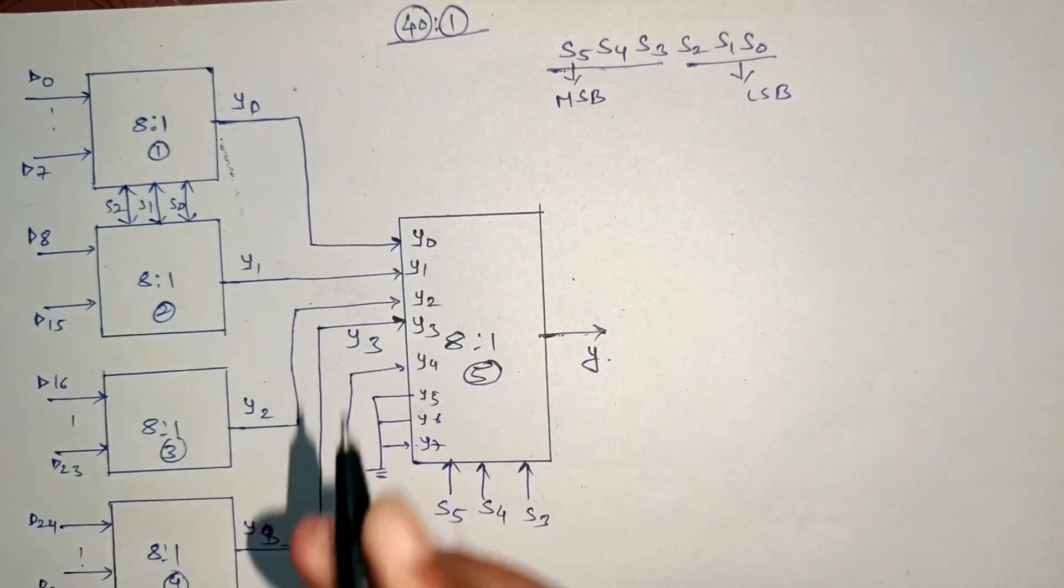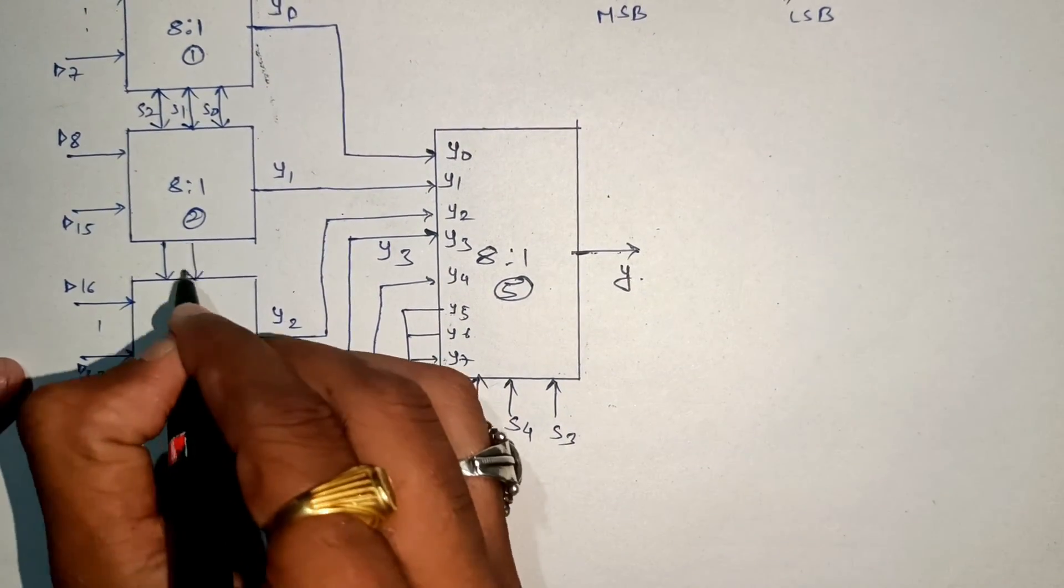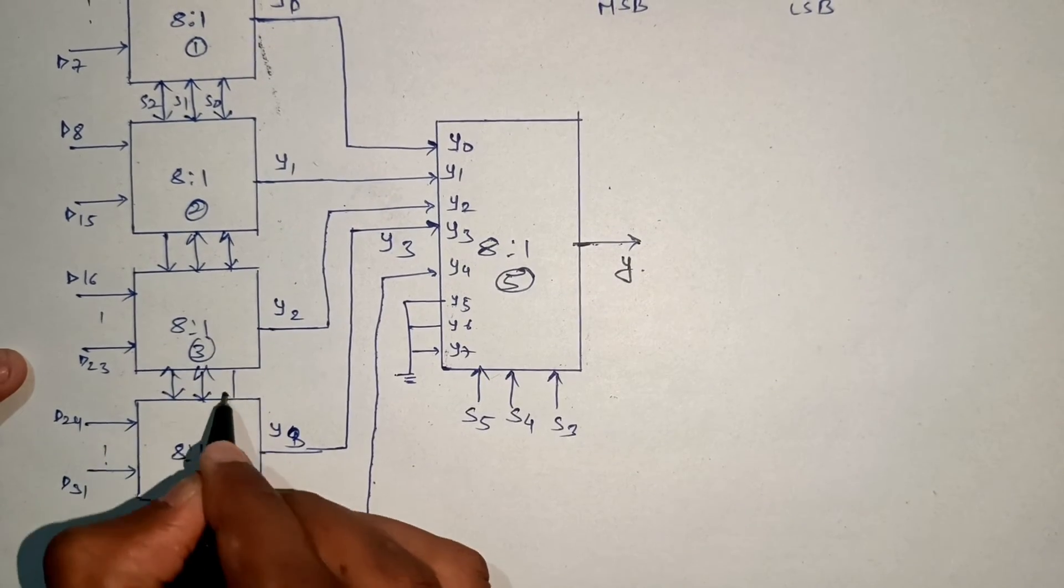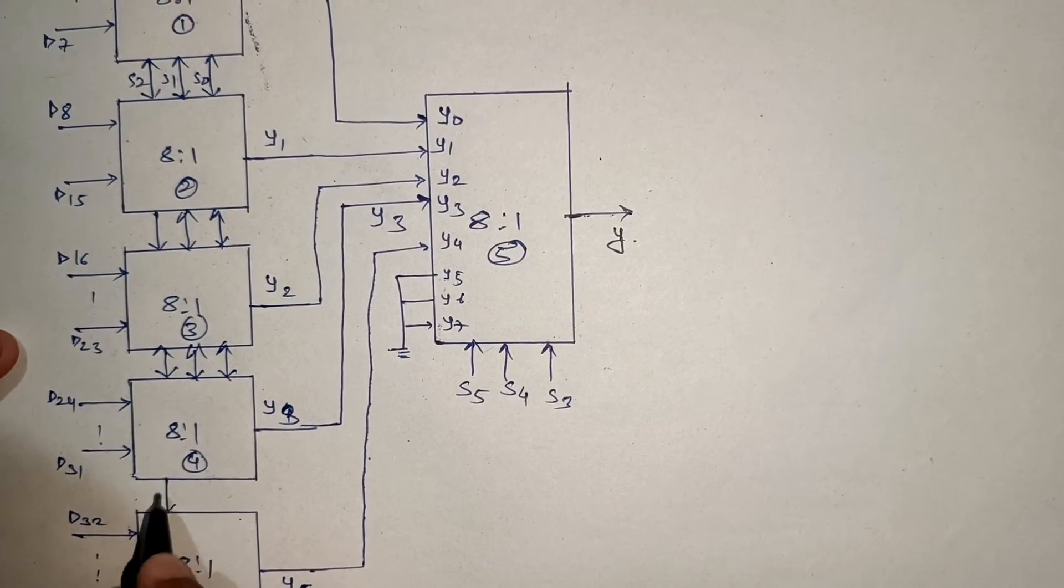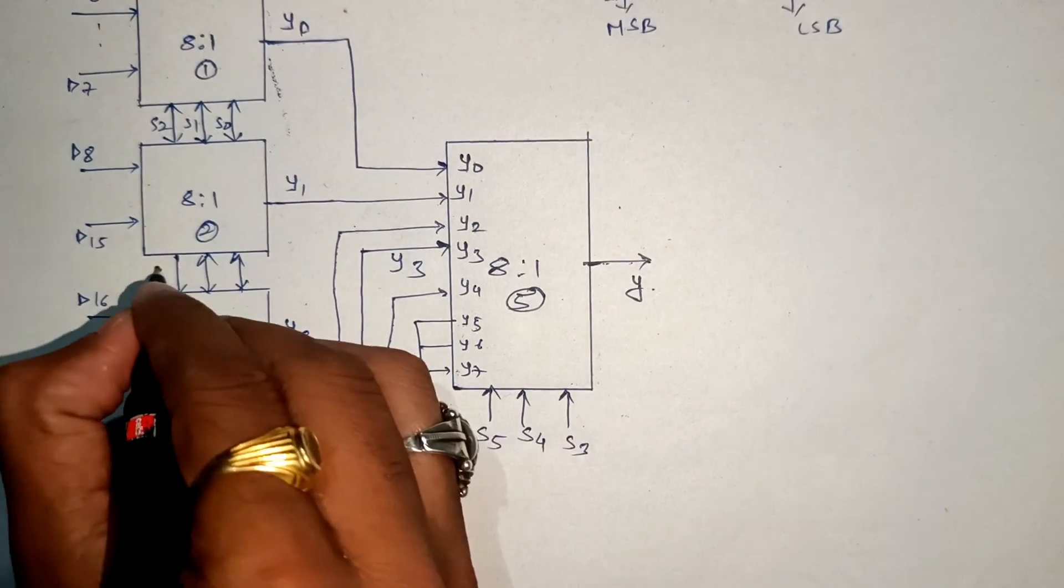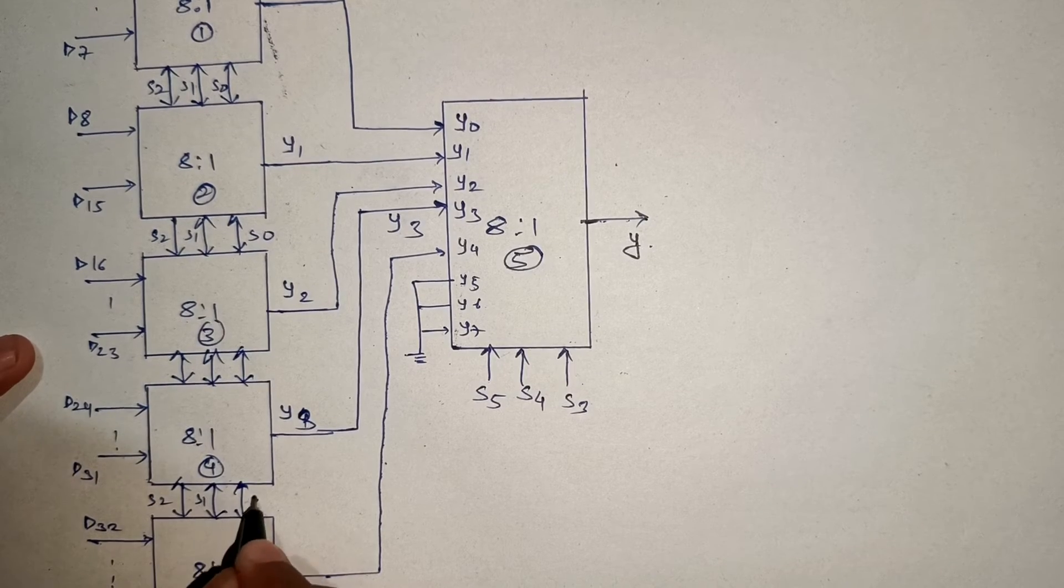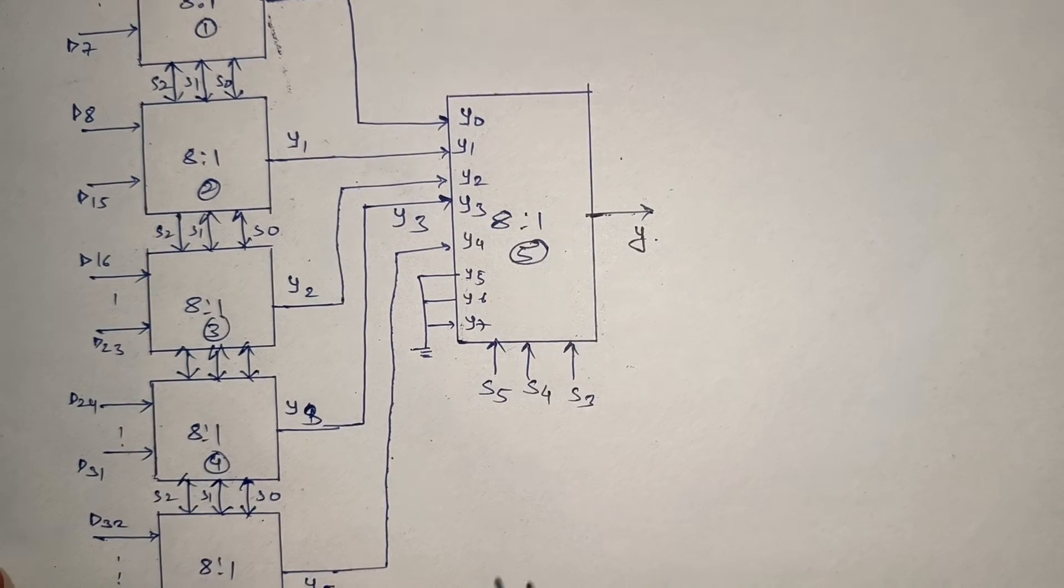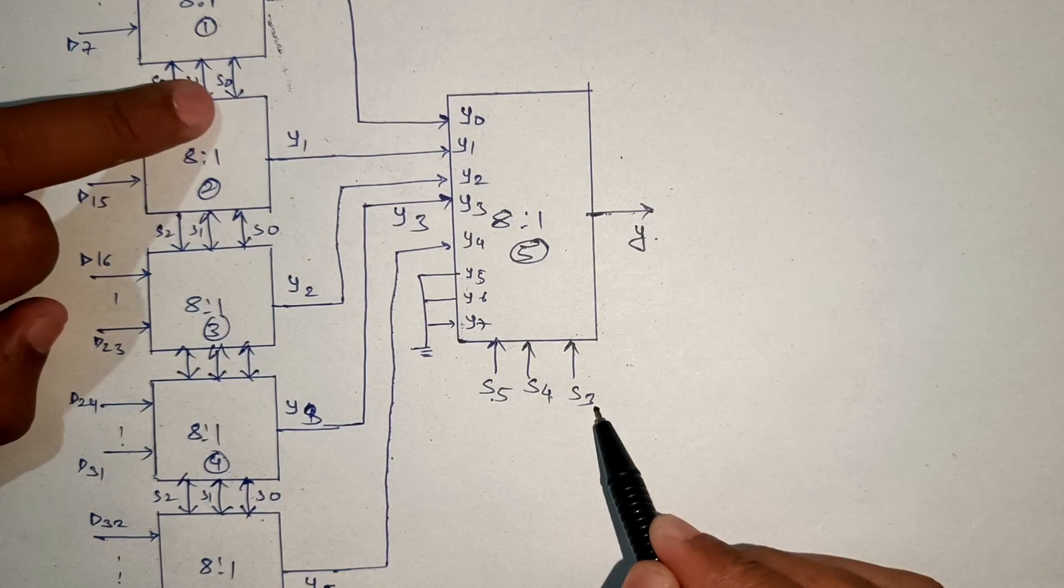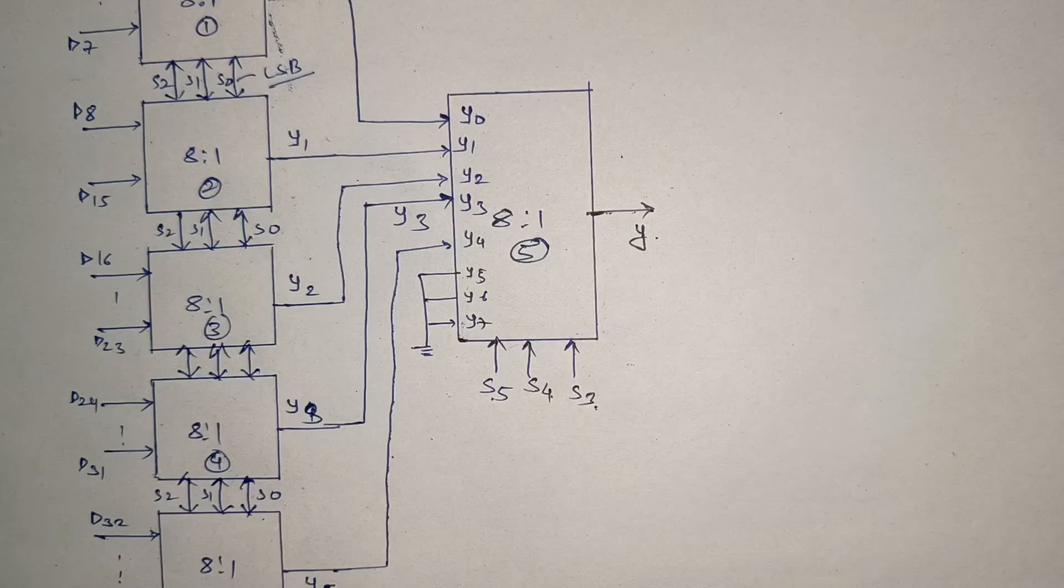We are left with three select lines: S2, S1, and S0. Let's assign them. S2, S1, S0 - similarly for rest all muxes. This is an important step. We assign the select lines S2, S1, S0. Again S2, S1, and S0 for each of the first stage muxes.